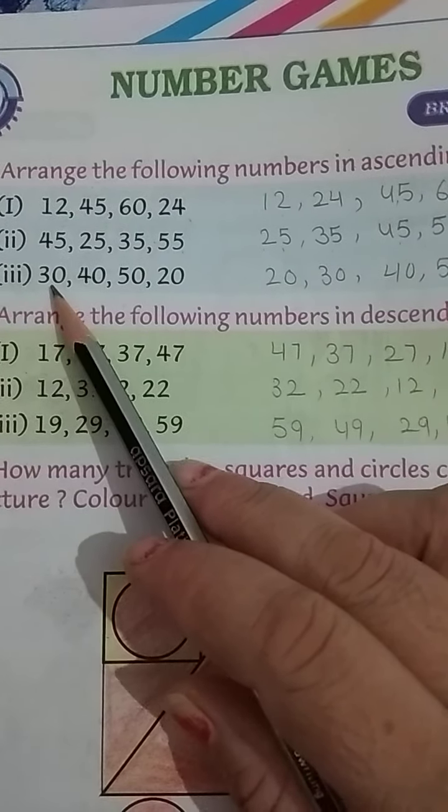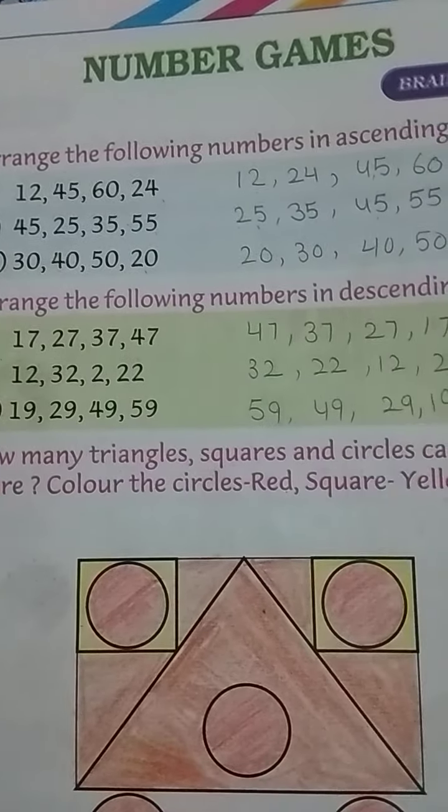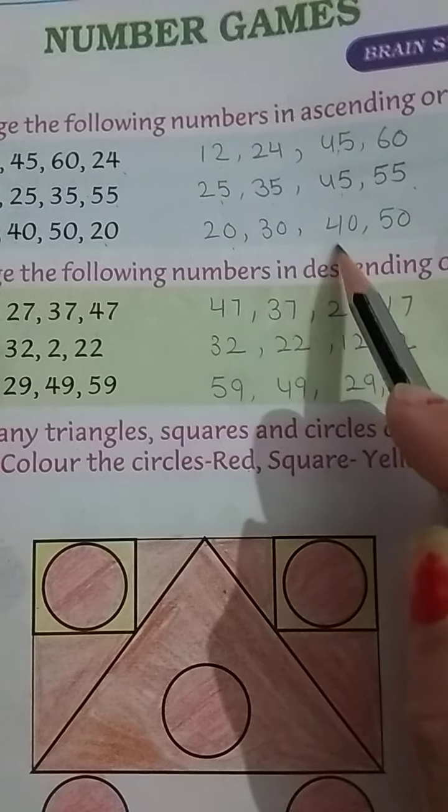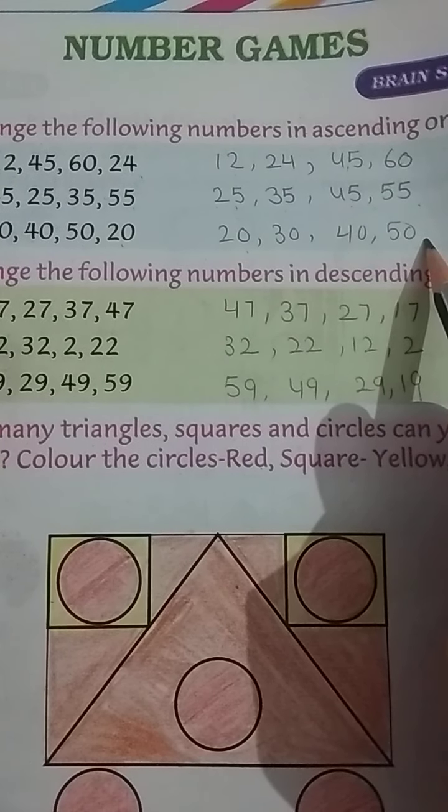Number third. 30, 40, 50 and 20. In ko bhi aap ascending orders me lekho ghe? 20, 30, 40 and 50. Understood?